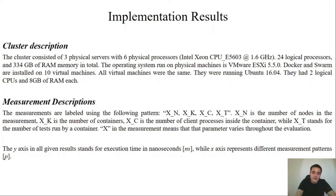Measurement description. Here the most important part is the pattern that we are using. The pattern is shown here XN, XK, XC and XT. XN is the number of nodes in the measurement. XK is the number of containers. XC is the number of clients. And XT stands for the number of tests in one container. XT is the number of tests only but in one container. In each measurement, in each graph, the Y axis stands for execution time while the X axis represents different measurement patterns.